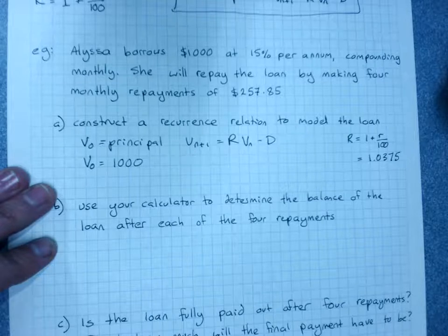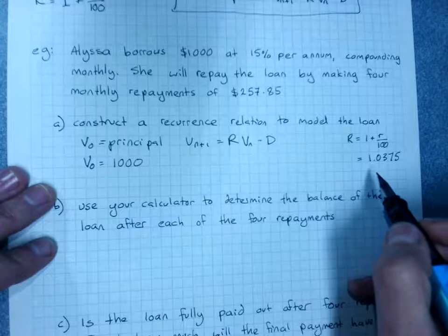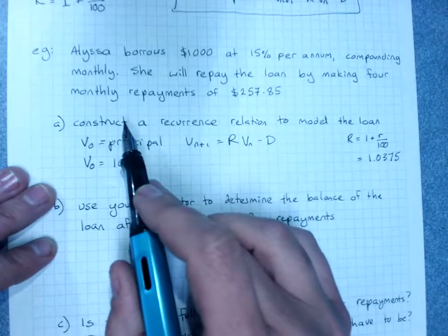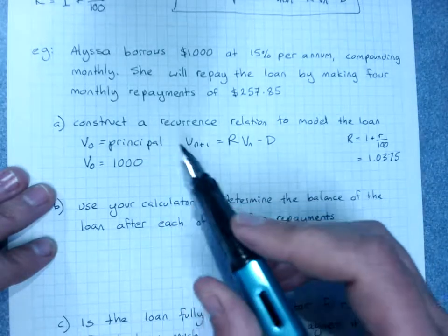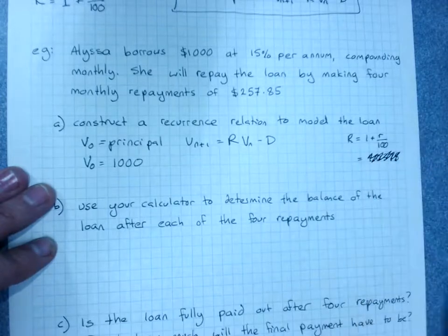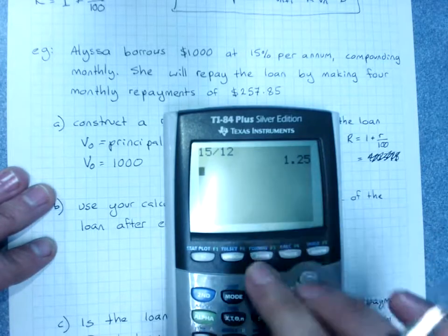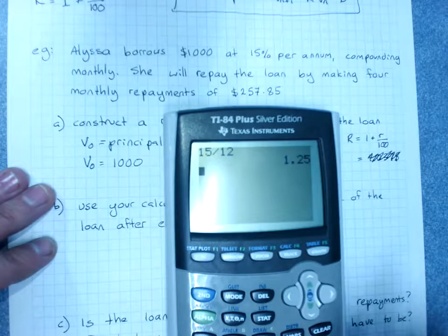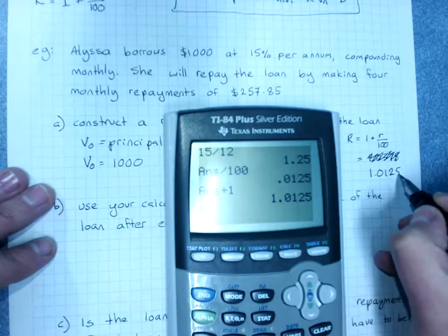Wait — it's monthly repayments, not quarterly. So we don't divide by four, we divide by 12. 15 divided by 12 means it's 1.25% per month. Divide that by a hundred and add one. R is 1.0125. My apologies.